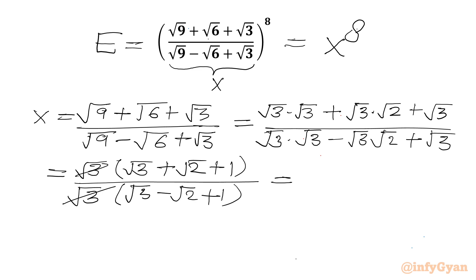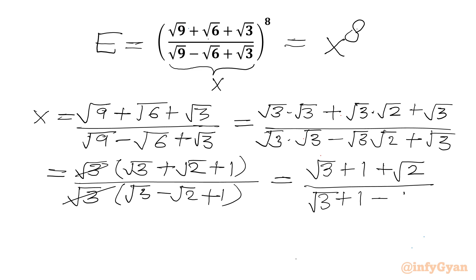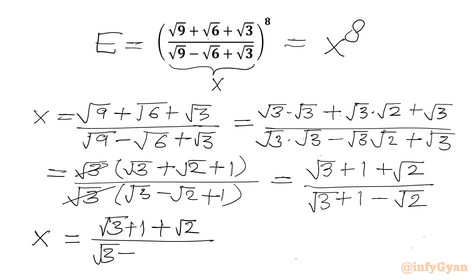So we can write the numerator as (√3 + 1 + √2) and the denominator as (√3 + 1 - √2). Now I will rationalize, writing x equal to (√3 + 1 + √2) over (√3 + 1 - √2), and I will rationalize our denominator.